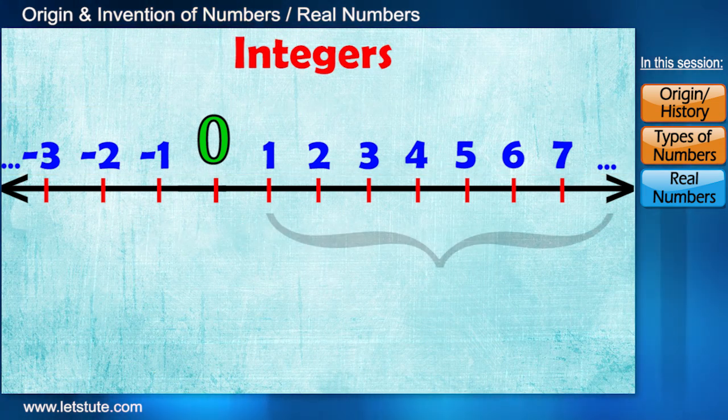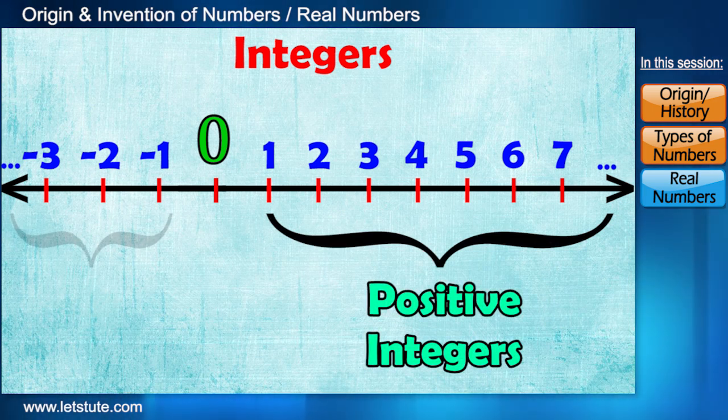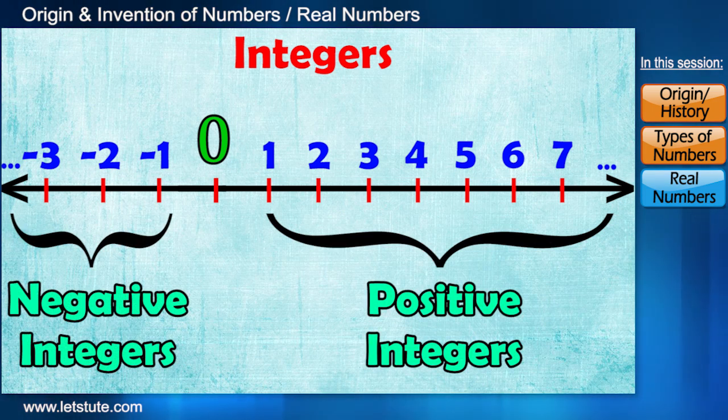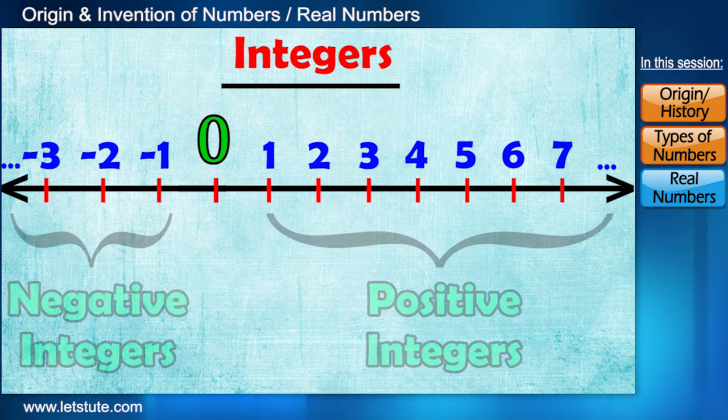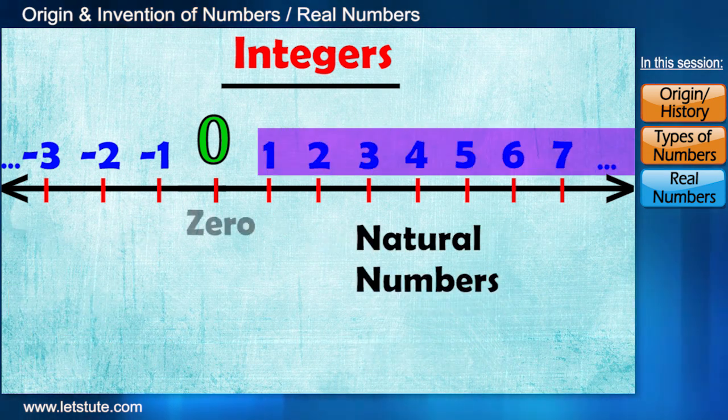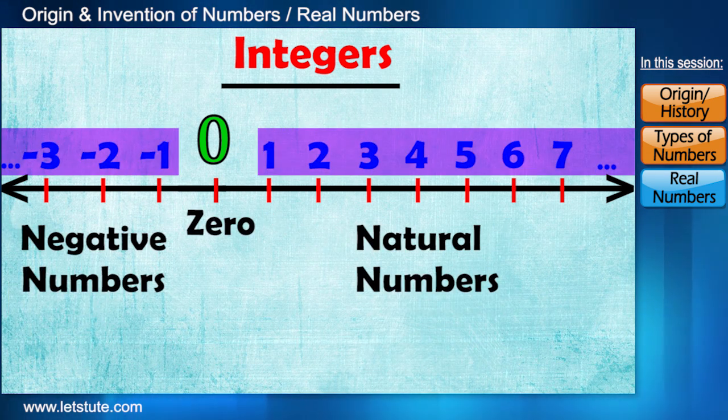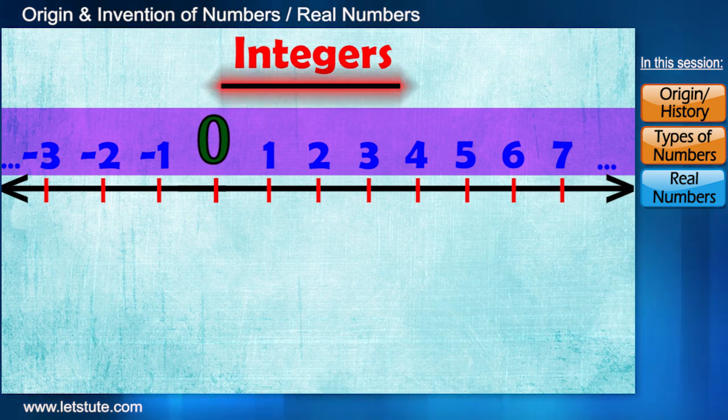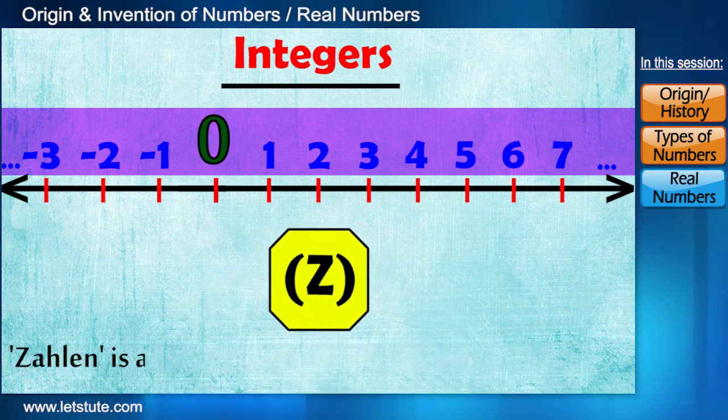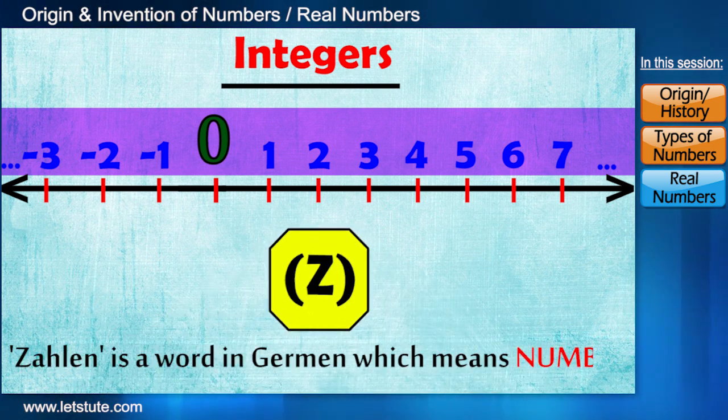So positive numbers are called positive integers and negative ones are called negative integers. Again, you must be thinking what the meaning of the word integer is and where it comes from. So let me tell you, after natural numbers and zero, negative numbers must have come into the picture. So people thought there must be a name for this new set, which was eventually named as integers. And the set of integers is denoted by the letter Z because Zahlen is a word in German which means numbers.